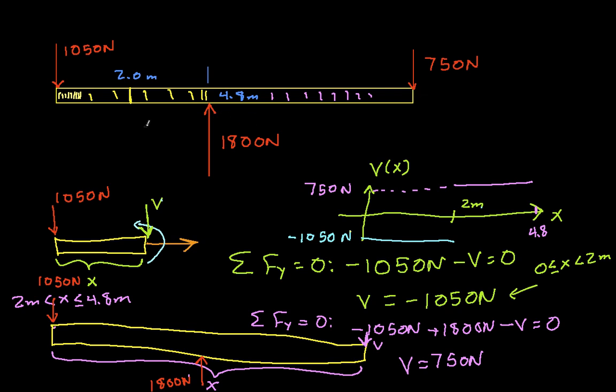Now, I could go on, I won't do this in any detail, and start looking at x is greater than 4.8 meters. And what happens is, at 4.8 meters, I have a negative 750 newtons, which cancels out the sum of these two. And so for x greater than 4.8 meters, the value is 0.